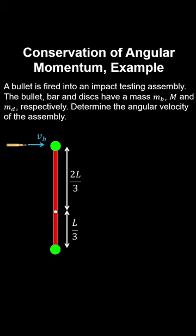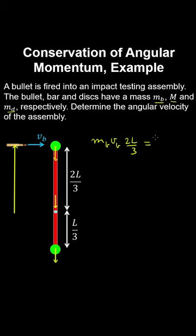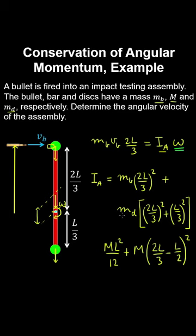A bullet is fired into a ballistic pendulum assembly; the bullet, bar, and discs have given masses, and we determine the angular velocity after impact. Taking the bullet and pendulum as a system and summing torques about the hinge, all forces of weight pass through the hinge so the net external torque is zero — conservation of angular momentum applies. The orbital angular momentum of the bullet (linear momentum times moment arm from pivot) converts to spin angular momentum of the assembly. After impact, the moment of inertia of the assembly about the pivot is calculated, and we solve for the angular velocity.